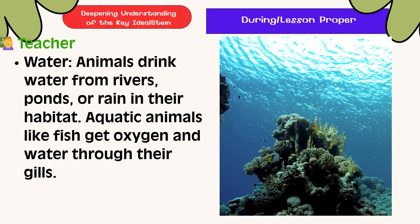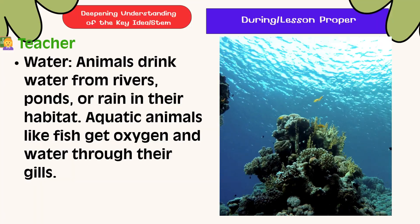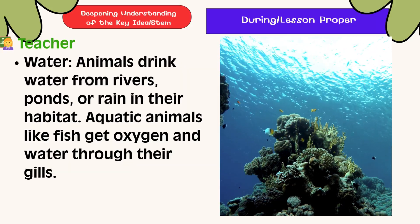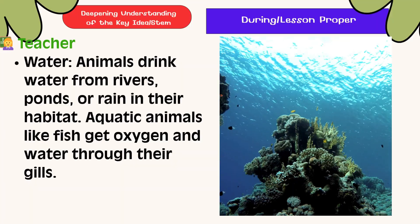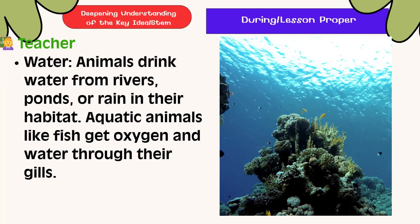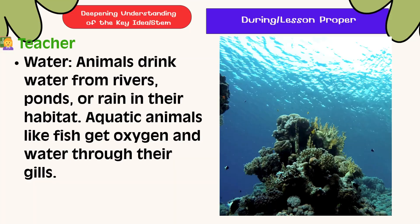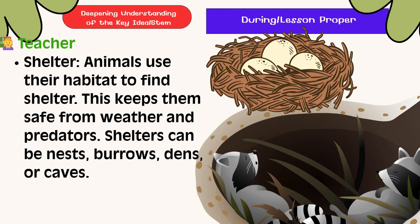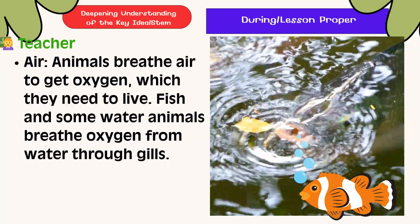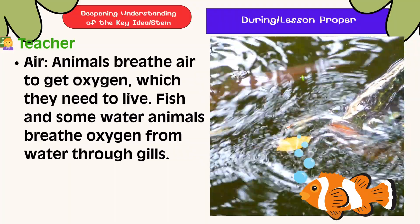Water: Animals drink water from rivers, ponds, or rain in their habitat. Aquatic animals like fish get oxygen and water through their gills. Shelter: Animals use their habitat to find shelter, which keeps them safe from weather and predators. Shelters can be nests, burrows, dens, or caves. Air: Animals breathe air to get oxygen, which they need to live. Fish and some water animals extract oxygen from water through their gills.